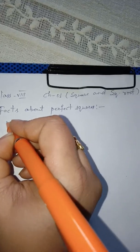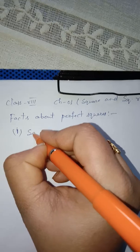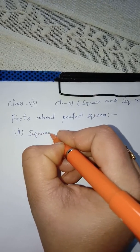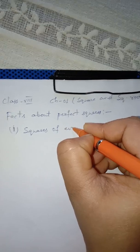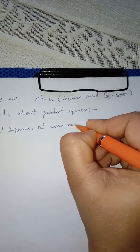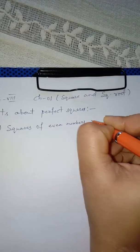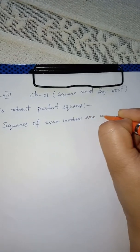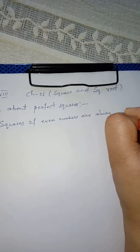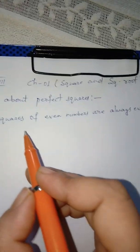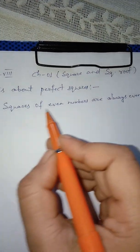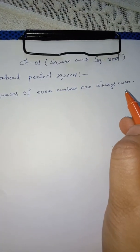There are many facts but some of them are important. The first fact is: squares of even numbers are always even.